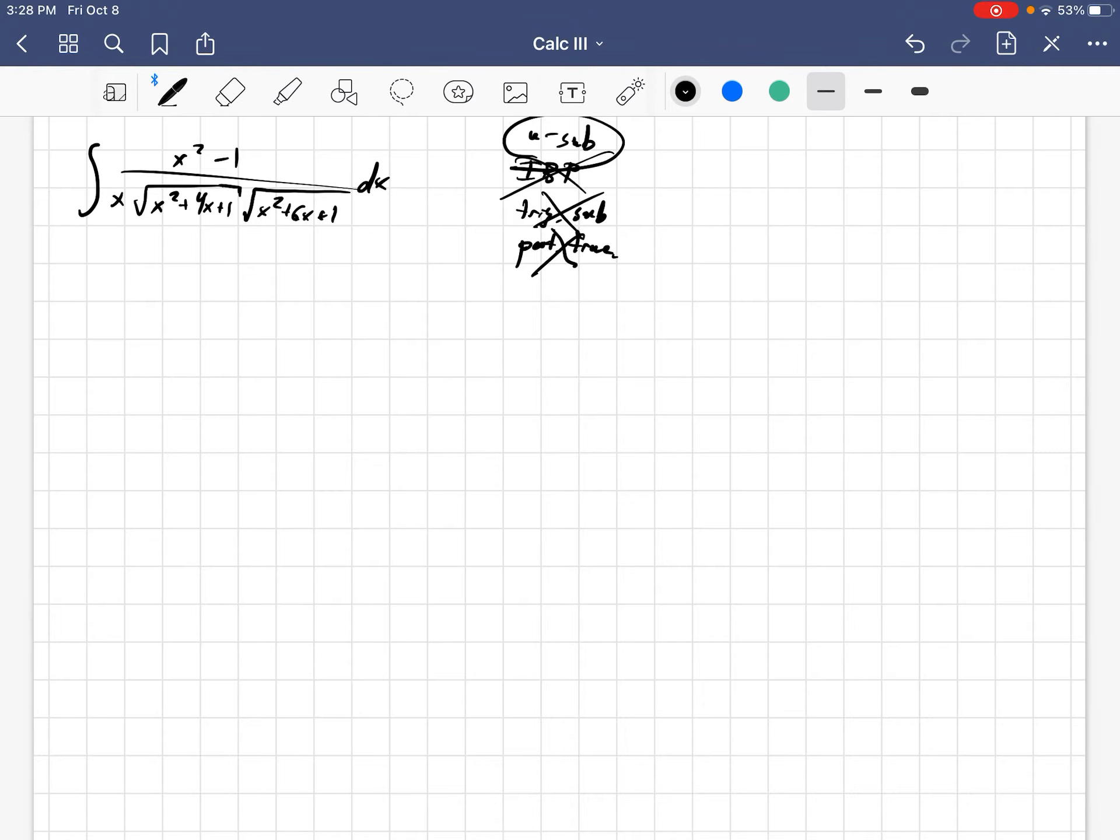U sub. Okay, so how are we going to get a u sub here? Well, truthfully, it's somewhat experiential, but I will do my best to motivate it. So what I'm going to do is I'm going to divide by this x here. And I'm going to get x minus 1 over x over square root x squared plus 4x plus 1, square root x squared plus 6x plus 1 dx. Now, let's look at x minus 1 over x. It's nice in a number of ways, this expression.